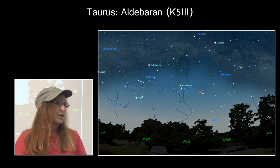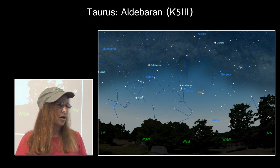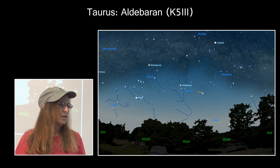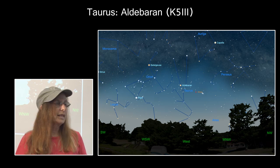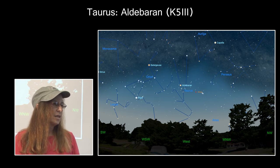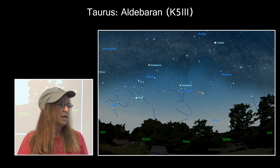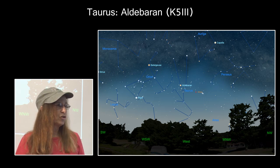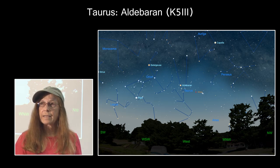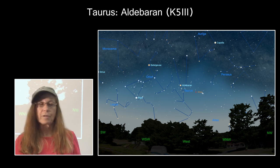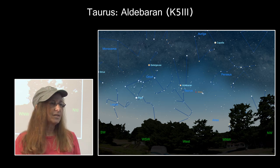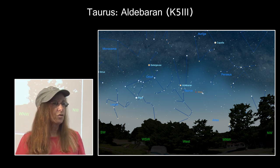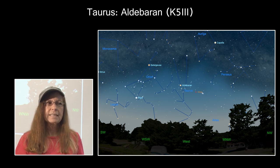Taurus the bull includes the star Aldebaran, an orangey red giant star. Taurus is located between Orion and the Pleiades. The Pleiades isn't a constellation — it's an open cluster of massive young stars. Orion has his two hunting dogs, Canis Major and Canis Minor, and his charioteer Auriga with Capella. He's fallen in love with one of the sisters in the Pleiades, the seven sisters — though you can only really see six when you look.